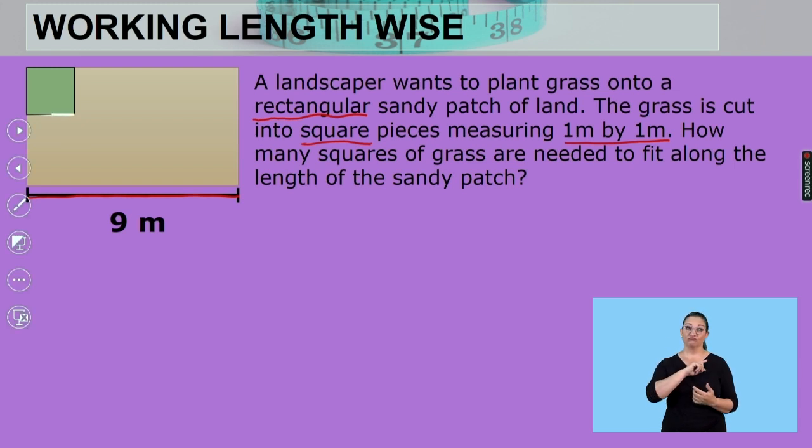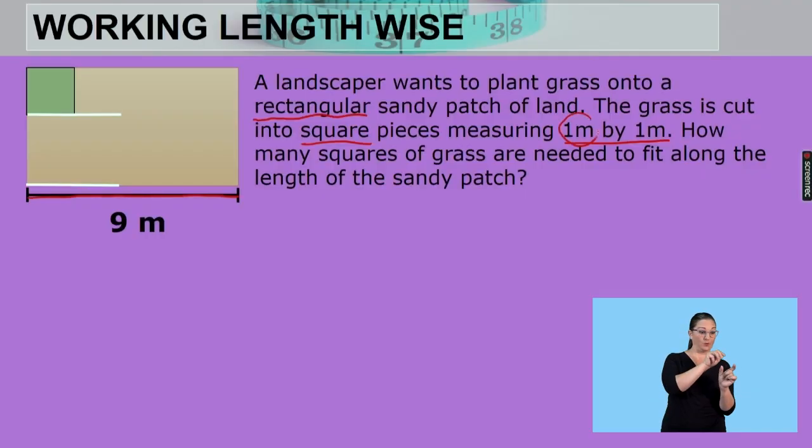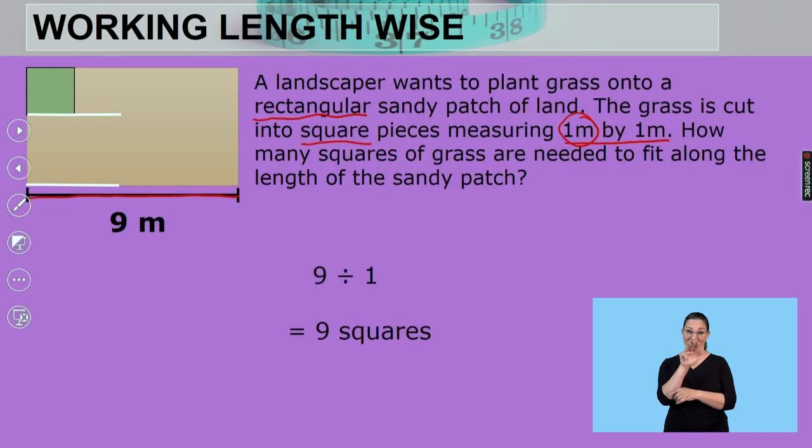So that piece, the piece that just appeared, that fits across the length. We've got to see how many times that little piece fits into nine. How much does that little piece measure? It measures one meter. So what's my calculation? My calculation is nine divided by that one. So I can fit nine squares across the length. Nice work.